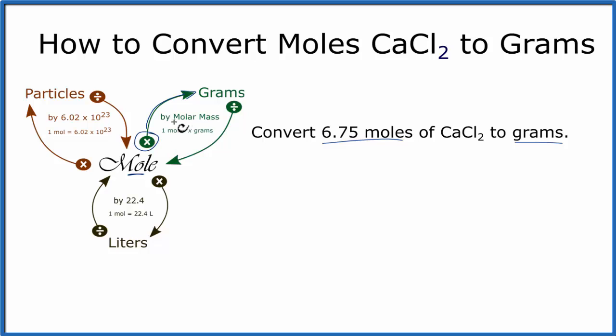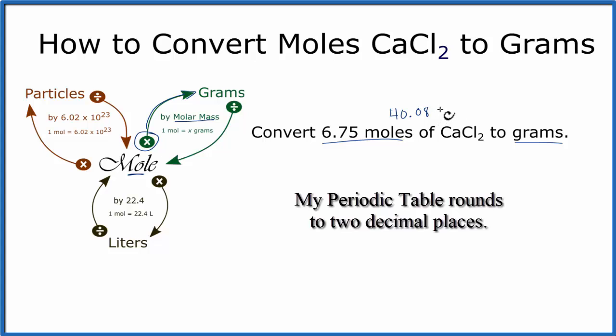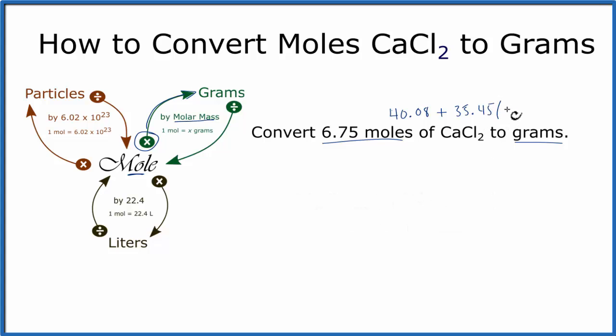That means we'll multiply by the molar mass. To find the molar mass for CaCl2, we look on the periodic table: calcium is 40.08 grams per mole, plus chlorine at 35.45 grams per mole. We have two chlorines, so multiply by 2, and we end up with 110.98 grams per mole. This is the molar mass for calcium chloride.